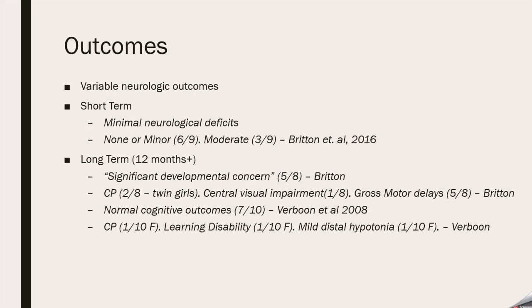Outcomes are also variable. Two main papers address this: Britton et al. (2016) and Verboon et al. Britton was the only paper able to show short-term effects: neurological effects were noted in 6 out of 9 patients, with moderate effects in 3 out of 9. For long-term outcomes, both Verboon and Britton show an increased risk for cerebral palsy — noted in 2 out of 8 in the Britton paper at 12 months post-infection, and 1 out of 10 in the Verboon paper.